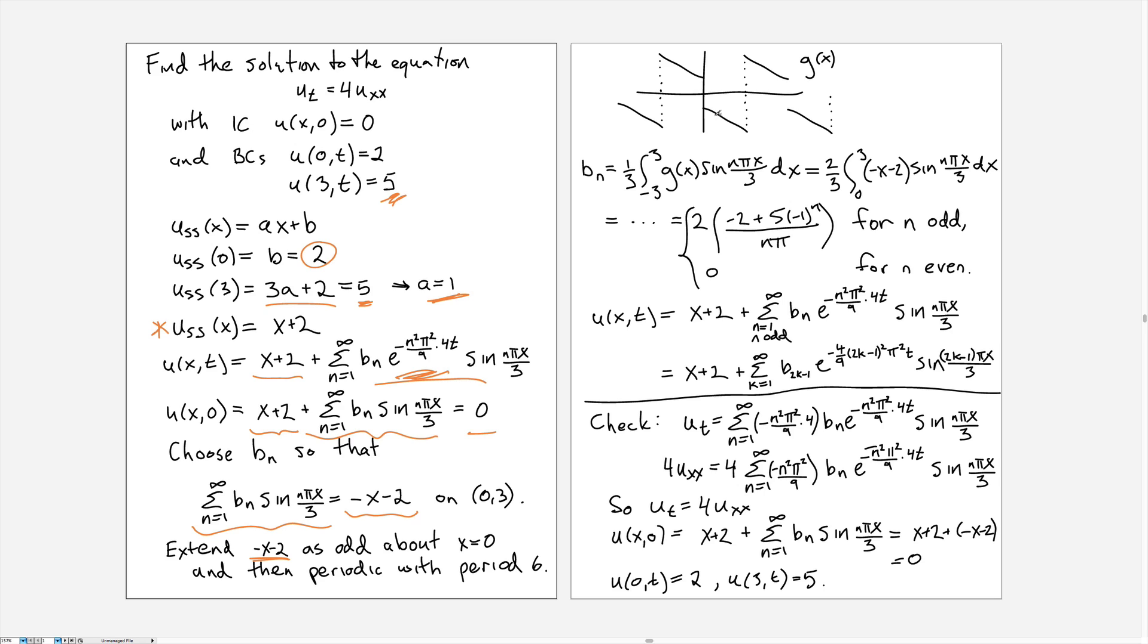And that means we take this -x - 2 function from 0 to 3, we extend it as odd, meaning we rotate it up to here and then paste that over and over. And then the b_n will be determined by this convenient simplified formula, which is twice 1 over 3 integral from 0 to 3 of -x - 2 multiplied by the sine functions.